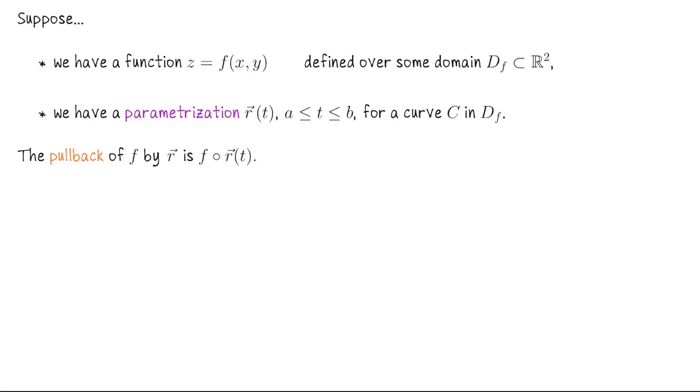I want to end today with just a quick remark, just a piece of vocabulary. Suppose we have a function z equals f of x and y. This is a scalar valued function of two variables. Imagine we have some plane curve living in the domain of f, for which we have a parametrization r(t) for t values between a and b. What we call the pullback of the function f by the function r is actually just the composition f of r of t. So that's like evaluate the scalar valued function on this parametrization.